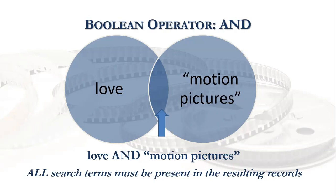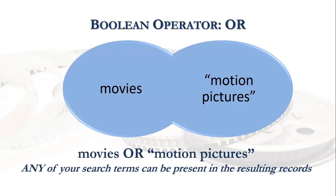Remember to always put your Boolean operators in all capital letters, otherwise the database or Google might not recognize them. You OR together similar terms. So in some databases it might be referred to as a movie as a subject heading, others motion pictures. To gather both, you would OR those terms together.